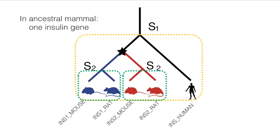Although these formal definitions are a bit complicated, HOGs correspond to the intuitive framework used by most biologists to study gene families across different levels of resolution. When we casually say the insulin gene in mammals, we refer to the collective members of the one and only insulin HOG defined at the level of all mammals. In particular, this includes two rodent copies, but there is no attempt to differentiate between them — at the level of mammals, it's all just lumped into one concept.